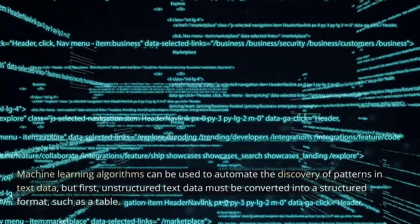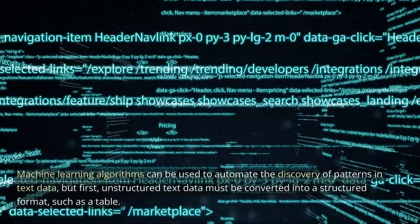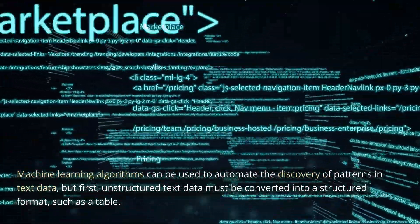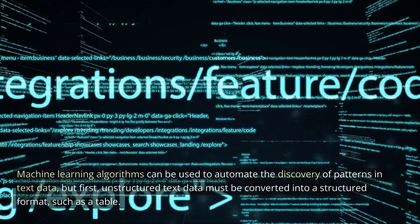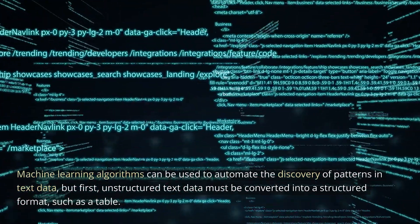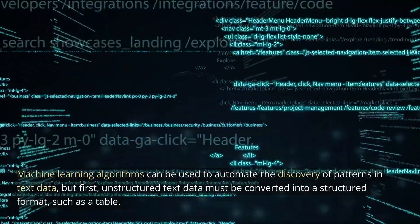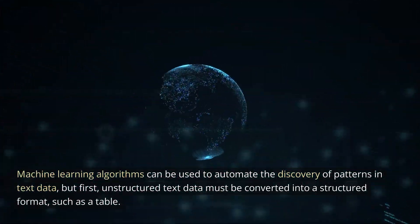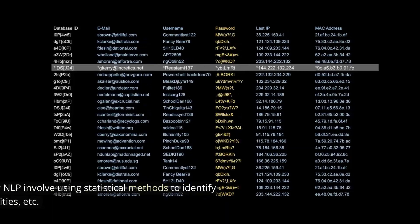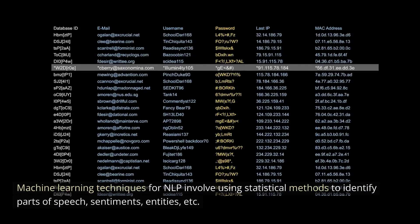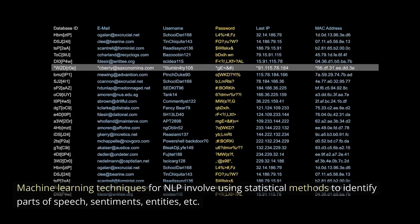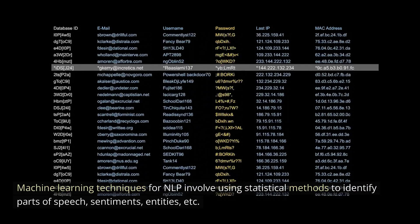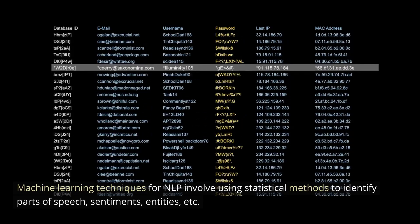Machine learning algorithms can be used to automate the discovery of patterns in text data, but first, unstructured text data must be converted into a structured format, such as a table. Machine learning techniques for NLP involve using statistical methods to identify parts of speech, sentiments, entities, etc.